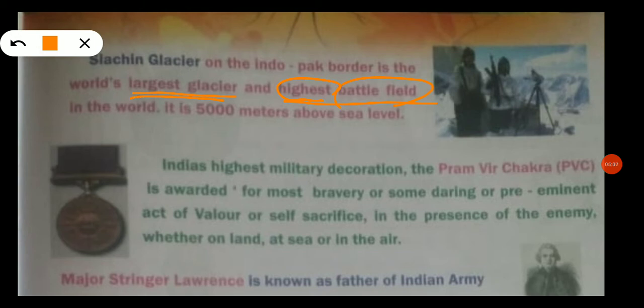The Siachen Glacier is the highest battlefield in the world, located in the context of India and Pakistan. It is the highest peak at 5,000 meters above sea level, in Jammu and Kashmir.